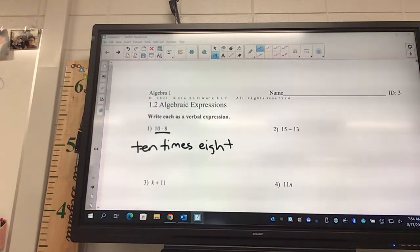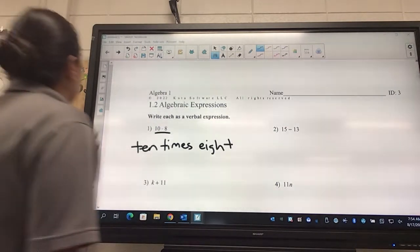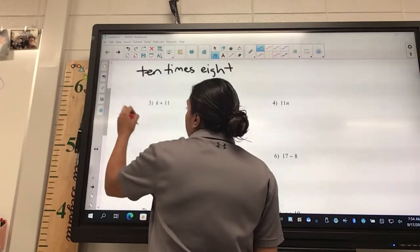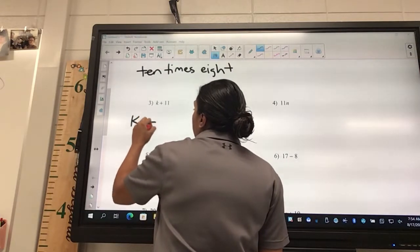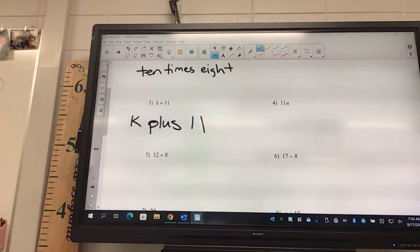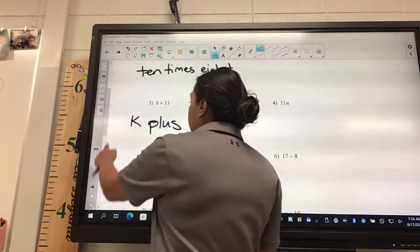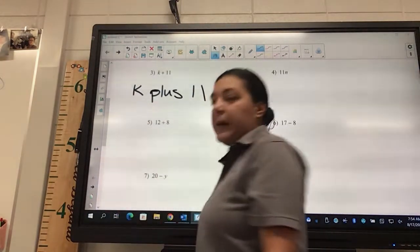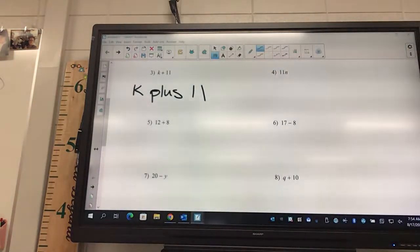Not ten, you need to spell it out, ten times eight. It's kind of goofy, but it is more good. Okay, what about the next one? K plus 11. I almost wrote the plus sign, okay? I'm going to do 11. Okay, third one. Twelve plus eight, okay? That's pretty easy. Nothing crazy.